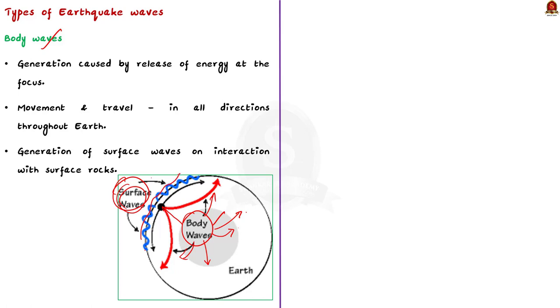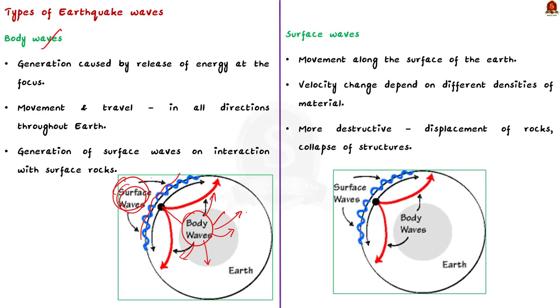Now, let us see about the surface waves. Surface waves move along the surface of the earth. Here, the velocity of the waves changes as they travel through materials with different densities. So, denser the material, the higher is the velocity. And also note that the surface waves are the one that are most destructive. They cause displacement of rocks and collapse of structures like buildings, houses, etc.